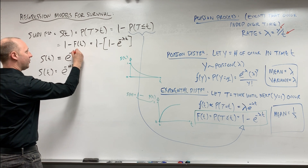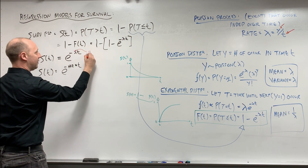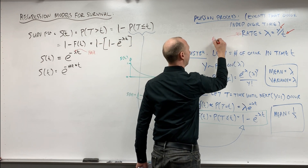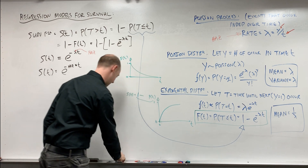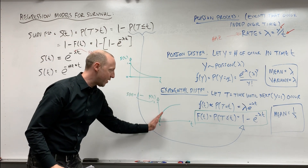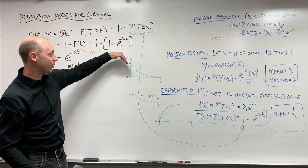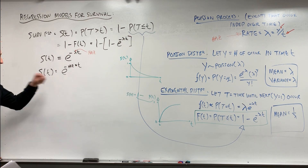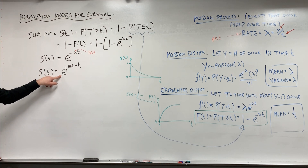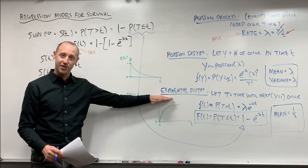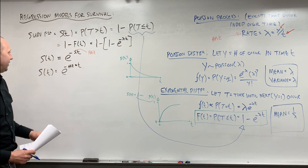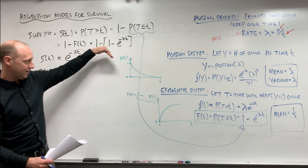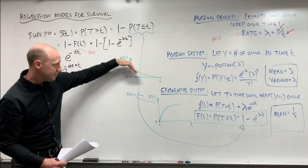We can rewrite this as e to the negative hazard times t. This lambda — the rate — is the hazard. The hazard is telling us the rate of increase in F of t, or equivalently the rate of decrease in the survival function. So using the exponential distribution, the survival function is e to the negative hazard times t, giving us a nice parametric curve.